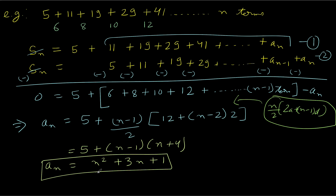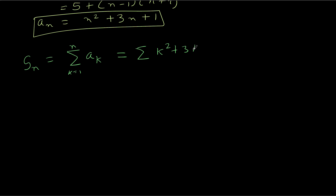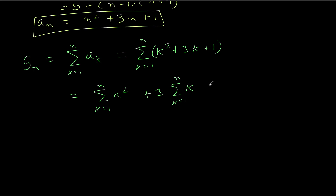Now we just need to find the sum of this series. The sum up to N terms is simply the sum of the general term A_K from K equals 1 to N. We have A_K equal to K squared plus 3K plus 1. Therefore, we write this as the summation of (K squared plus 3K plus 1) for K from 1 to N, which we split into: summation of K squared plus 3 times summation of K plus summation of 1, all from K equals 1 to N.